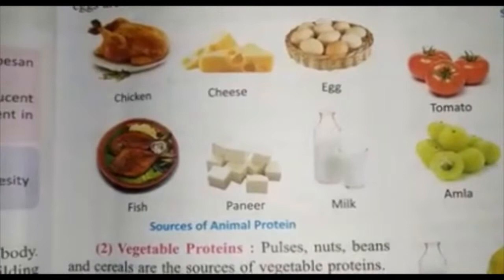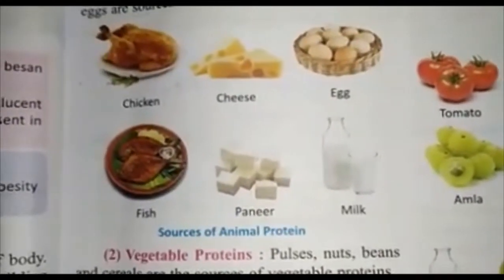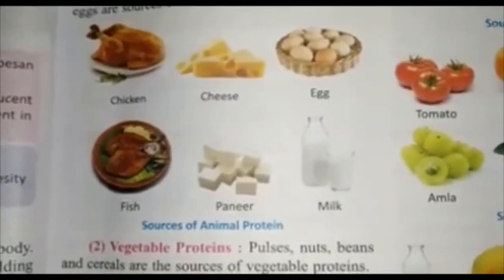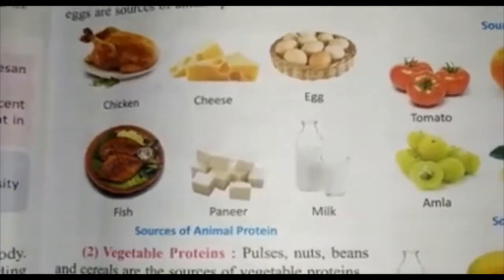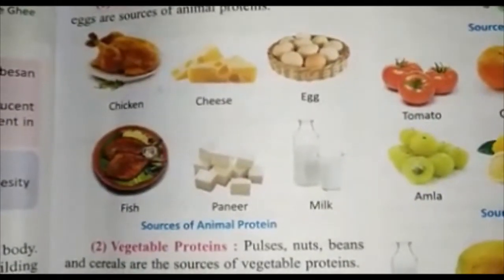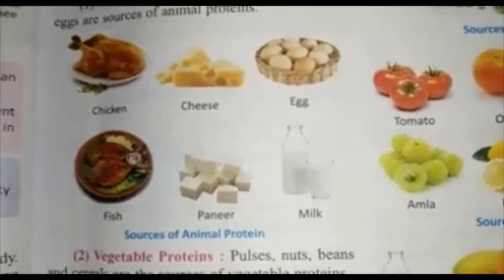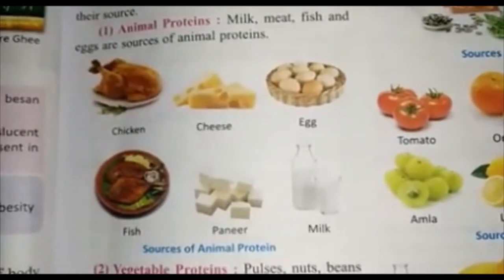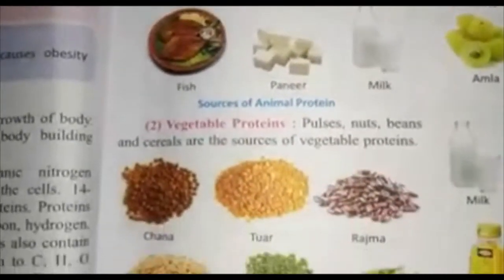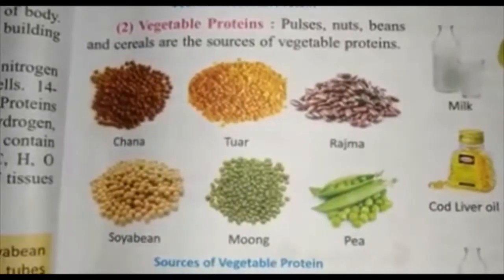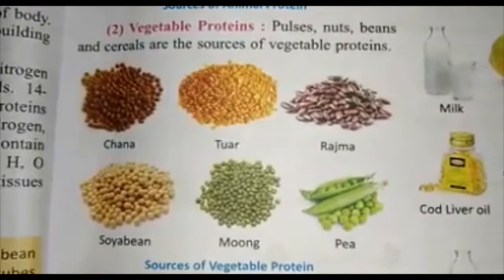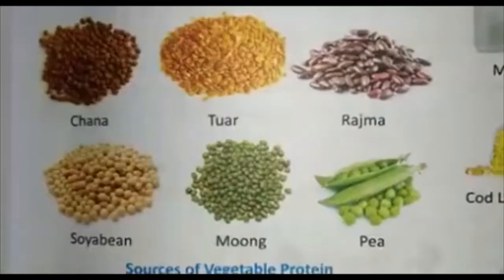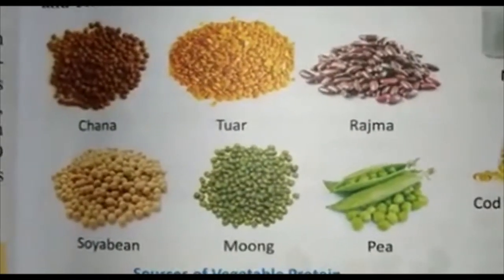Next, protein. Protein mainly helps in the growth of the body. Protein-rich food is known as body-building food. Proteins are grouped into two on the basis of their source: first is animal protein and second is vegetable protein. Milk, meat, fish and eggs are sources of animal proteins. Pulses, nuts, beans and cereals are the sources of vegetable proteins. Deficiency of protein causes malnutrition.